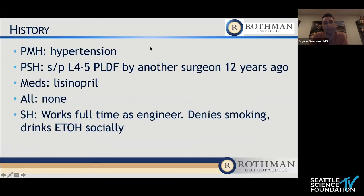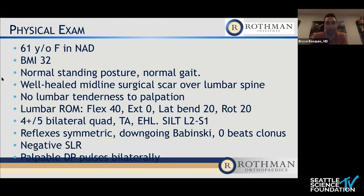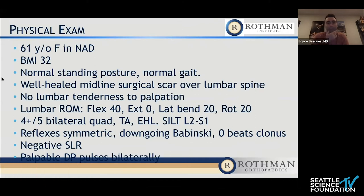History of hypertension. Surgical history is a prior L4-5 posterior lumbar decompression fusion by another surgeon 12 years ago. Currently on medication for hypertension, no allergies. Works full-time as an engineer, no smoking, drinks alcohol socially. On exam, she's a 61-year-old female, mildly obese, BMI 32, normal standing posture, normal gait, well-healed midline surgical scar of the lumbar spine, no tenderness to palpation posteriorly. Lumbar range of motion is 40 degrees flexion, extension to neutral, 20 degrees of lateral bending and rotation. Some very mild weakness in the bilateral quads, tibialis anterior, and EHL. Otherwise 5/5 strength, sensation intact to tactile touch bilaterally. Reflexes are symmetric. No long tract signs, negative clonus, negative straight leg raise, and palpable pulses distally.